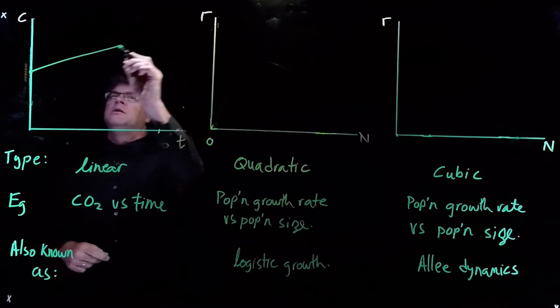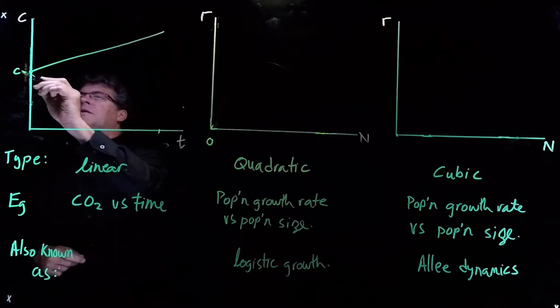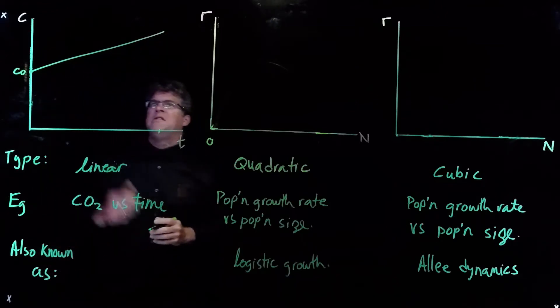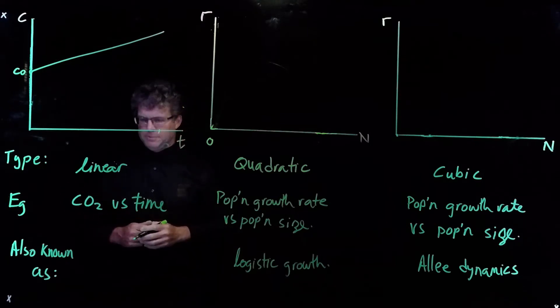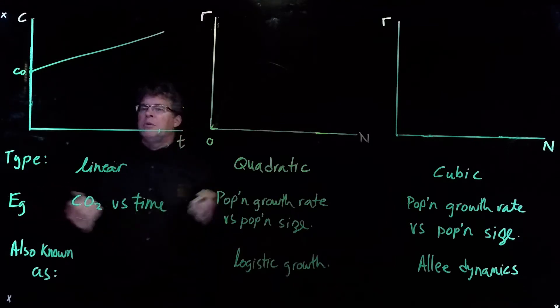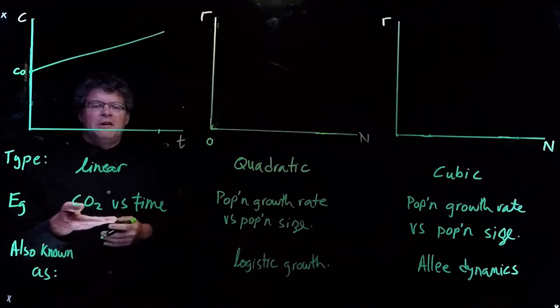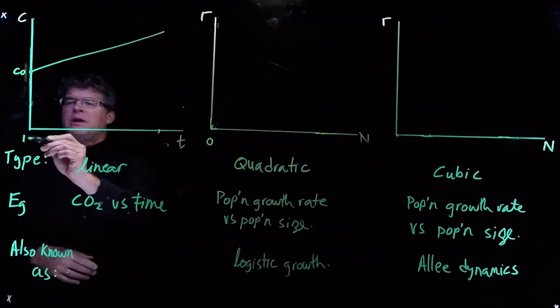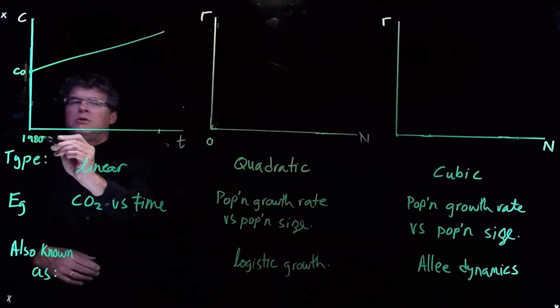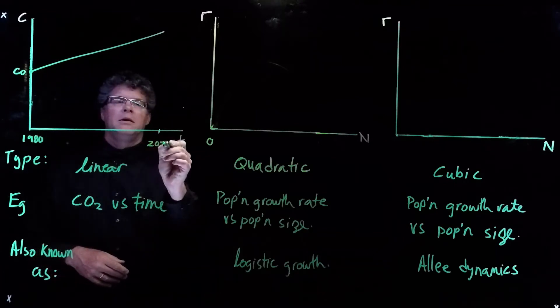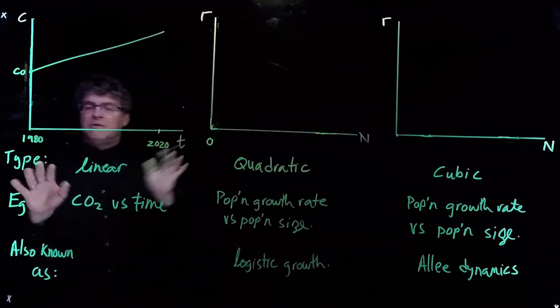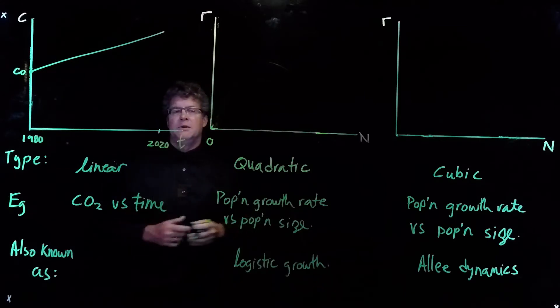A linear function has an intercept, we'll call this c0, and it has a slope. For example, a linear function could be used to describe the level of carbon dioxide versus time from about 1980 to about 2020. And it turns out that a linear function does a very good job of doing this.